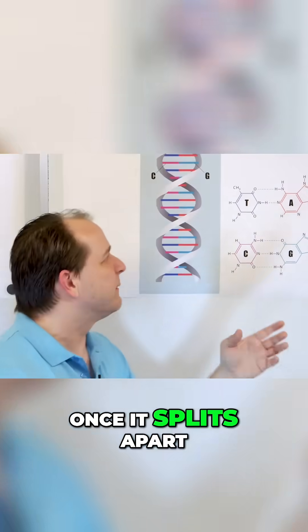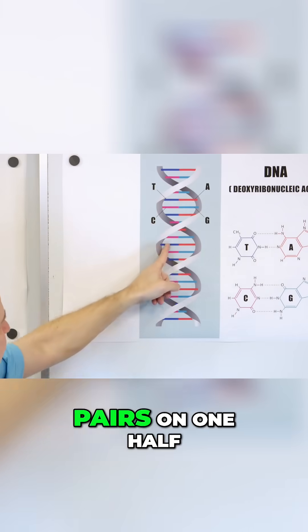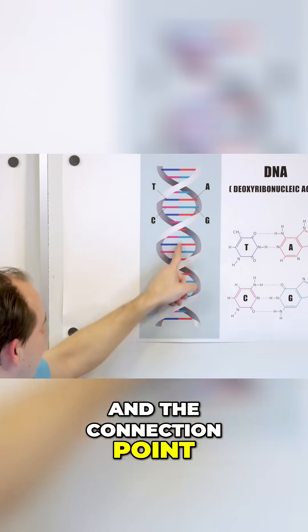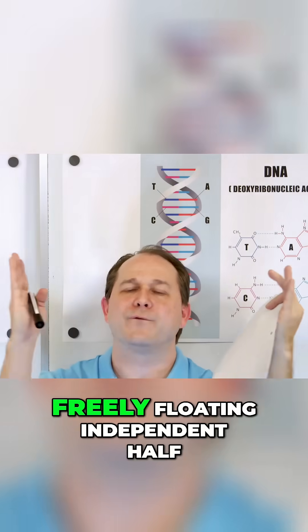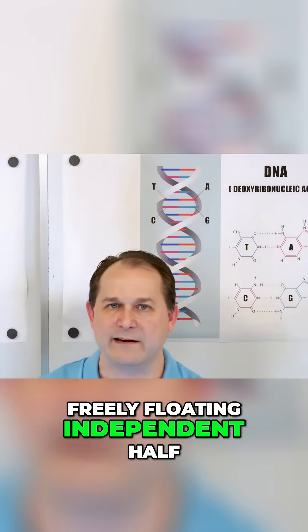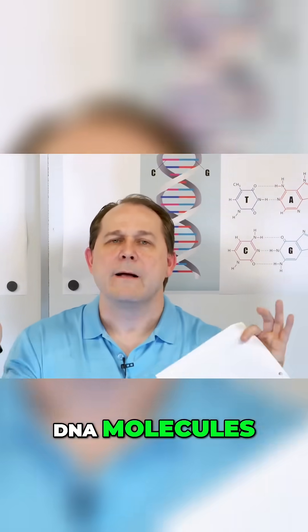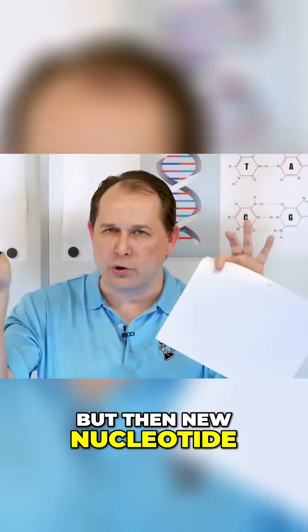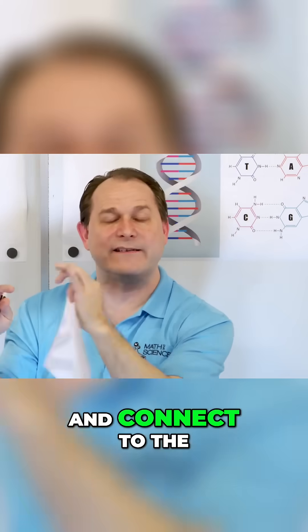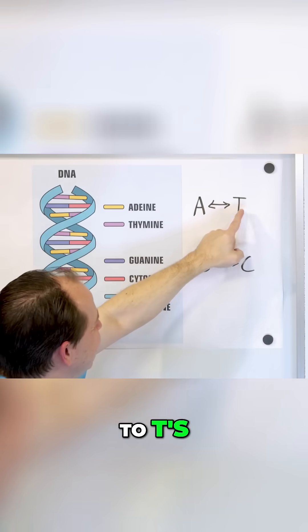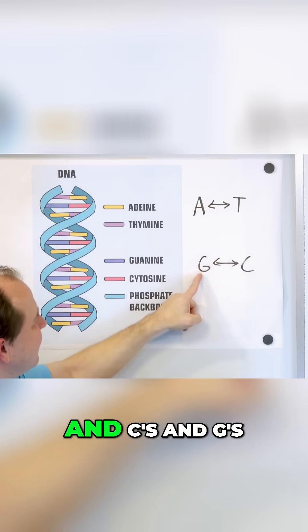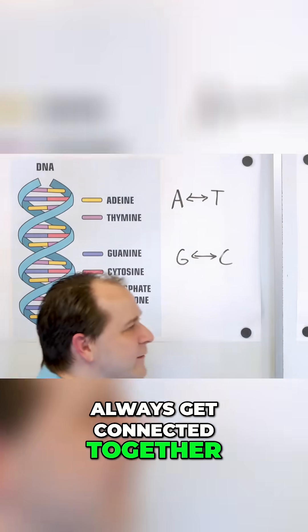Once it splits apart, you have the base pairs on one half and the connection point is now severed, and then you have the base pairs on the other half. Now you have two freely floating independent half DNA molecules. But then new nucleotide bases can come in and connect to the attach points because remember, A's always get connected to T's, T's to A's, A's to T's, and C's and G's always get connected together.